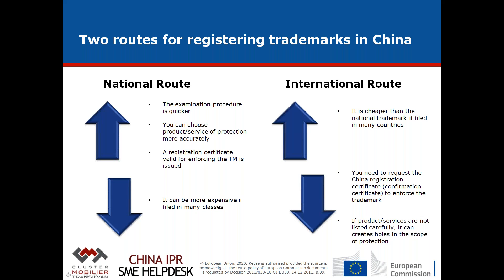If you're planning a more strategic approach and want to register in the US, China, Japan, and the EU, then the international route may be worth it. This is something to discuss with your attorney based on budget considerations, because the international route has a basic fee regardless of whether you register in one or ten countries, with additional fees per country. The national route is more viable when you need a quicker registration, because it's a little faster and you immediately receive a registration certificate in Chinese.